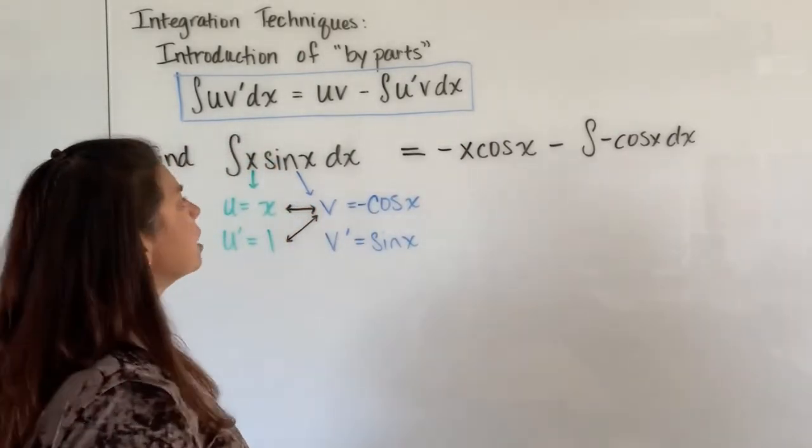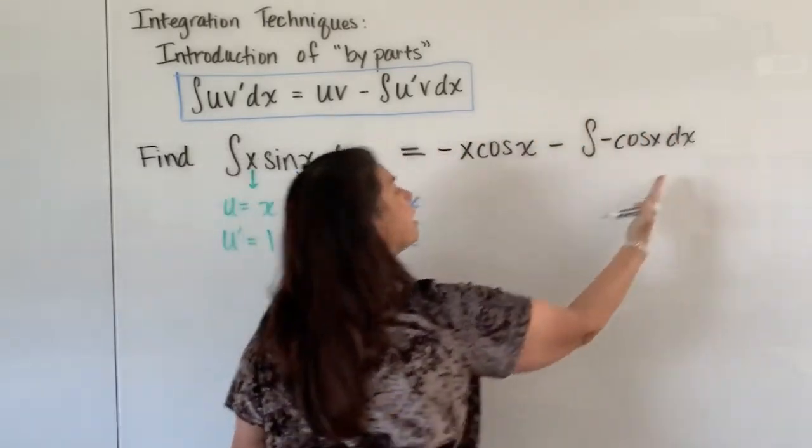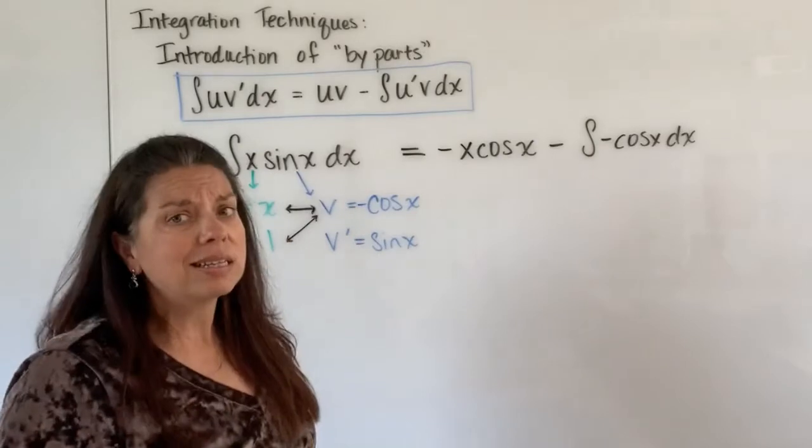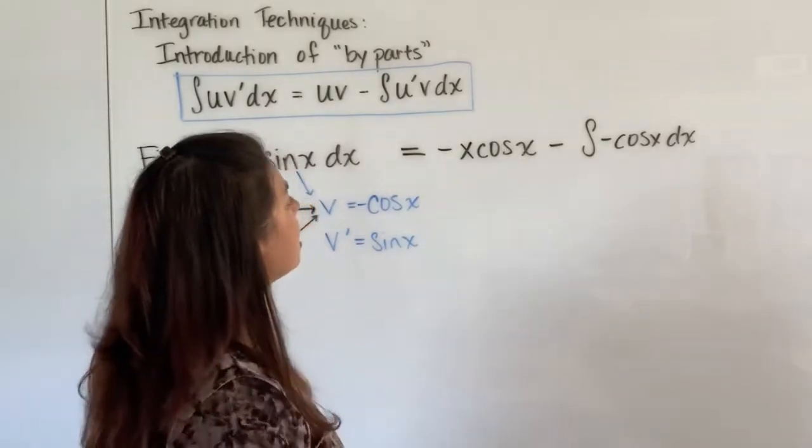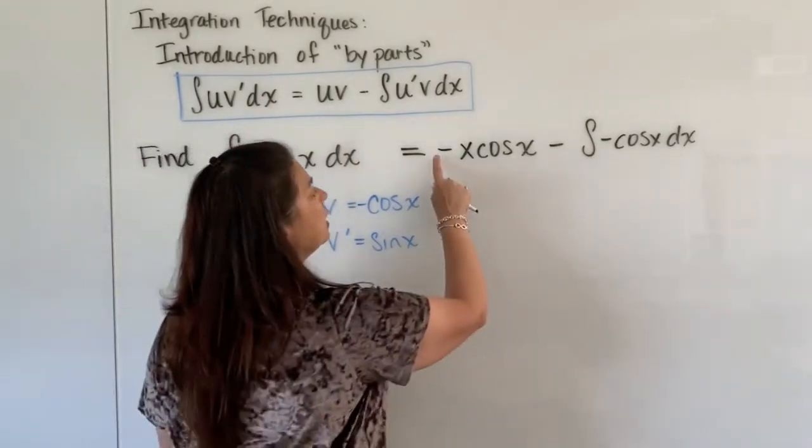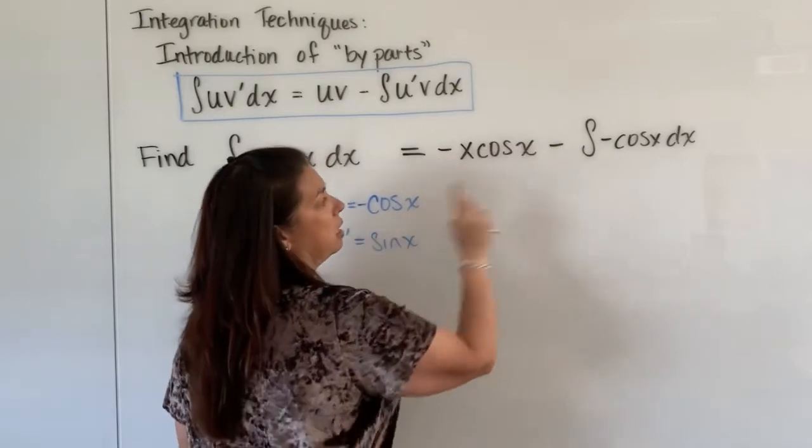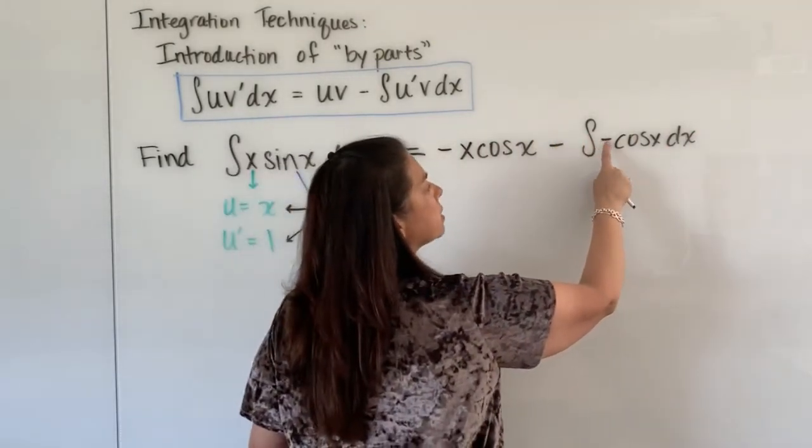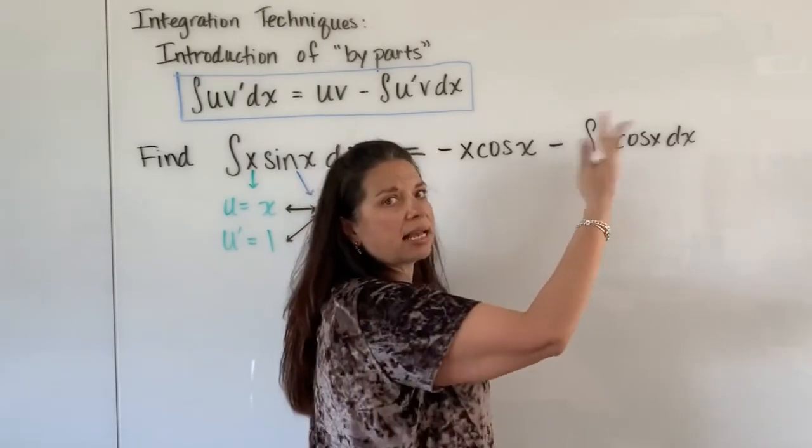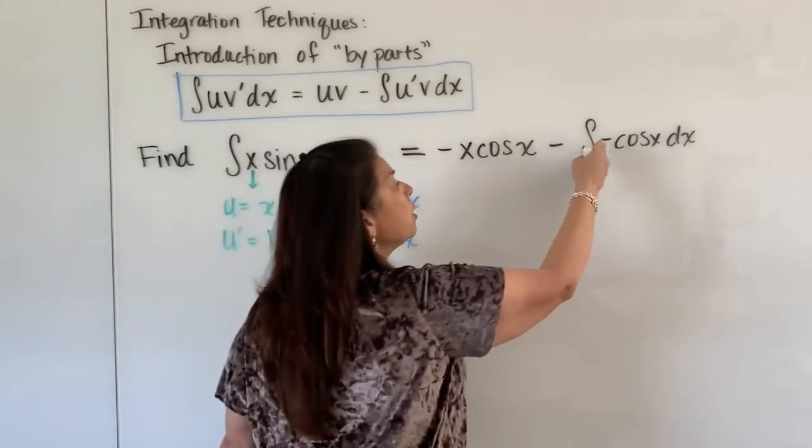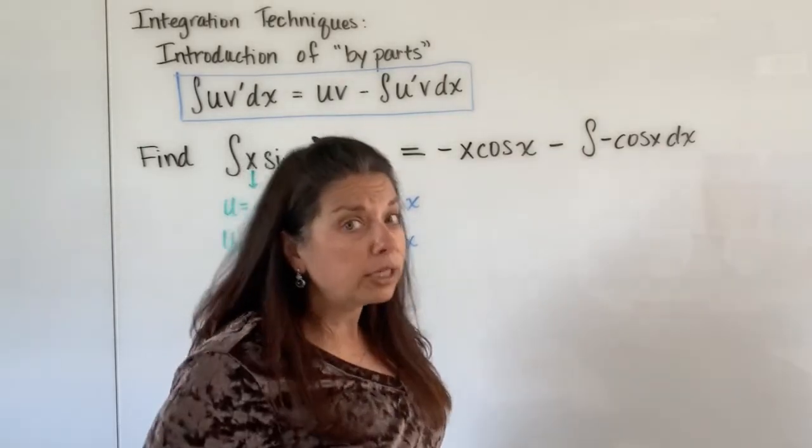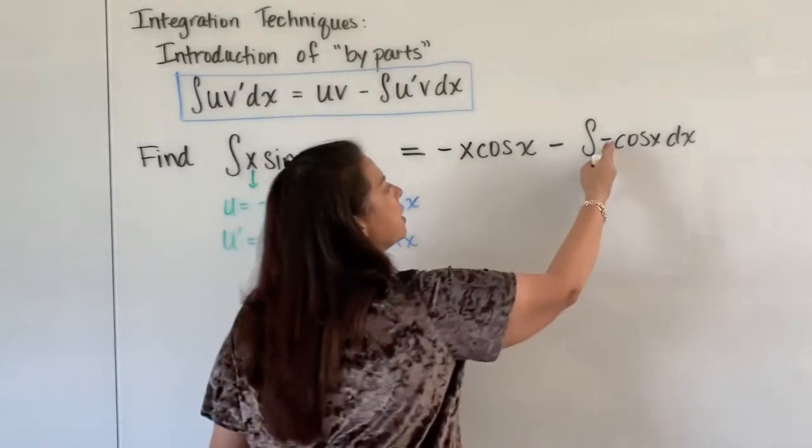Well we're not done because what I have as my initial problem equal to this piece over here still involves an integral and I need to take care of that. At least this part here is done but I now need to tackle this part. One thing I want to notice, I have a negative here that's technically a negative one in front of the cosine x. We can bring that out in front, treat it like a constant which it really is, and then I would multiply by the negative that's already here.